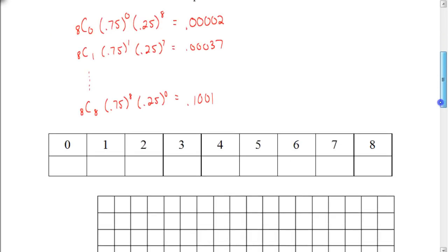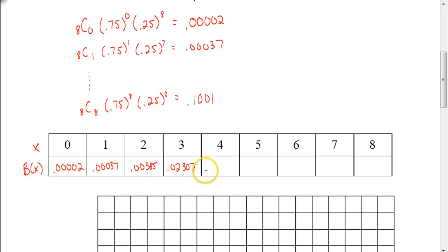We're going to complete this table and fill in that information, then graph it. The table uses x in the formula, and we use b(x) to represent the probability values. When you compute these on your calculator, the values are approximately: 0.00037, 0.00385, 0.02307, 0.0865, 0.2076, 0.3115, 0.267, and 0.1001. You want to make sure you know how to find those values yourself — that's covered in the previous lesson.